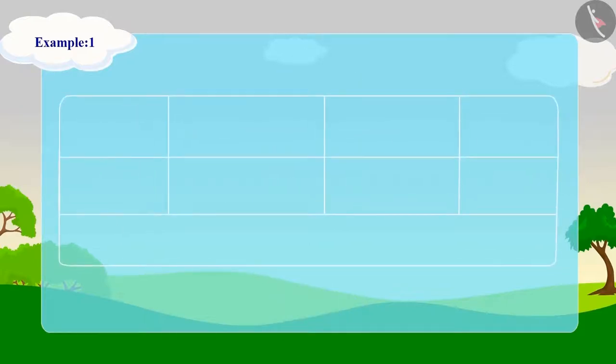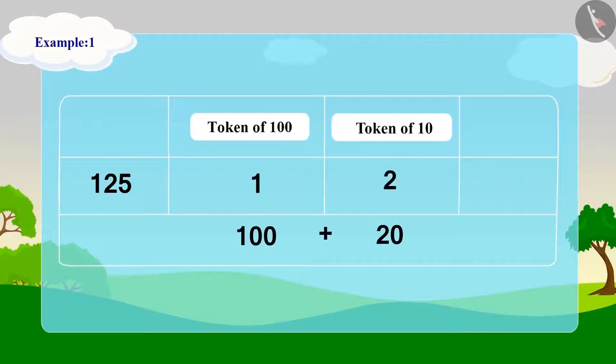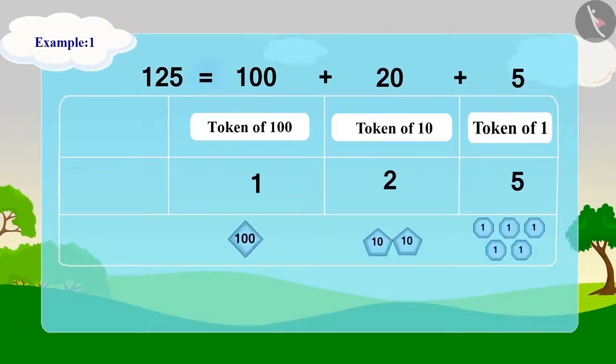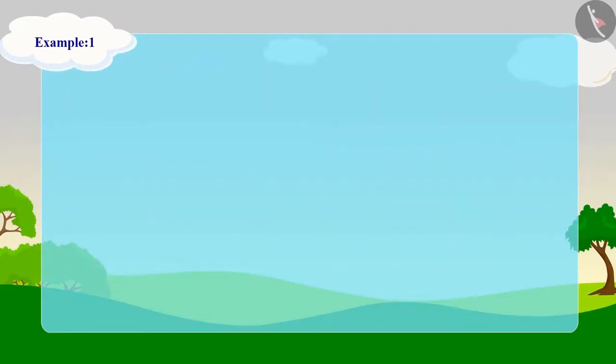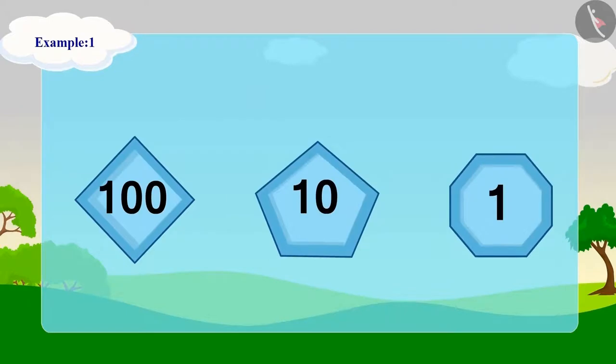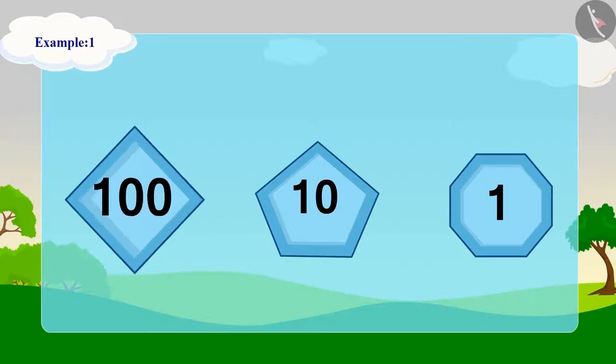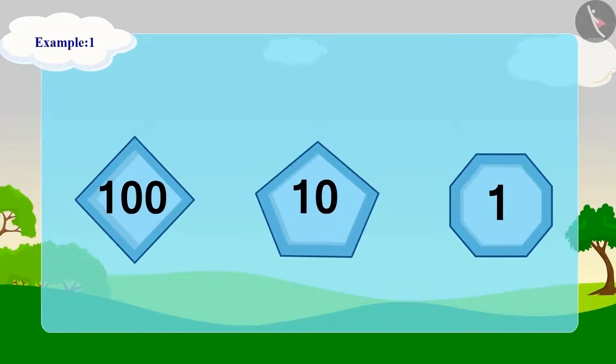In this way, Appu counted all 125 pencils and showed them with one token of 100, two tokens of 10, and five tokens of one. Appu counted 125 pencils using his tokens. We can easily identify and write three-digit numbers using such tokens. Using this method, we can write any three-digit number using Appu's tokens of 100, 10, and one.